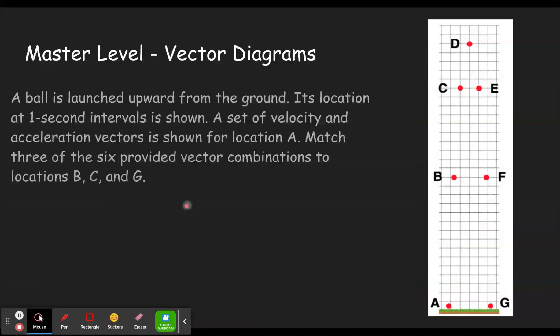All right, moving on to the master level. Yes, you have now become a master. So now you're going to draw vector diagrams. Well, you're actually given six of them, and you'll drag them into place. But I'll draw them, and you'll see the idea. So in this case, we're going to look at B, C, and G. You could look at any ones. I believe it always gives the velocity vectors as red.